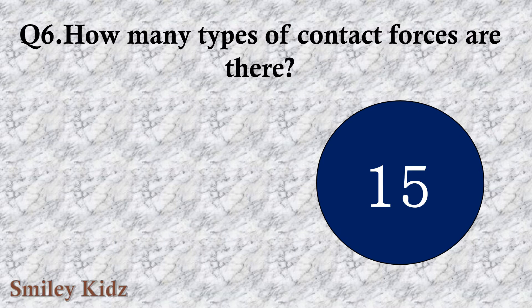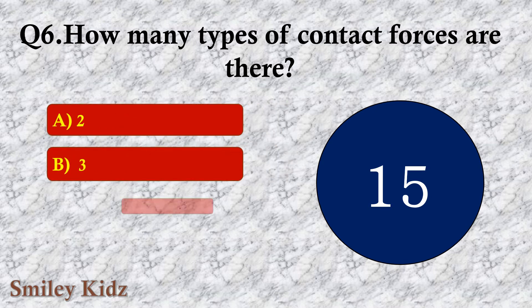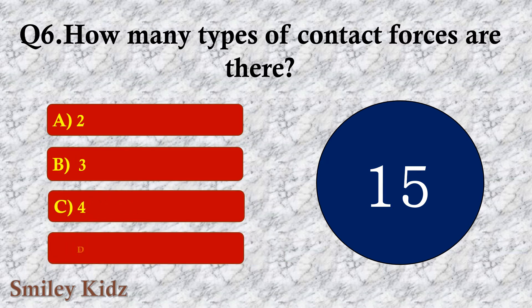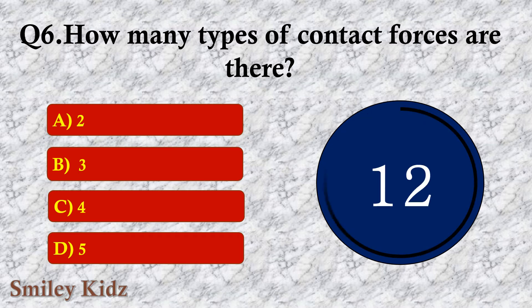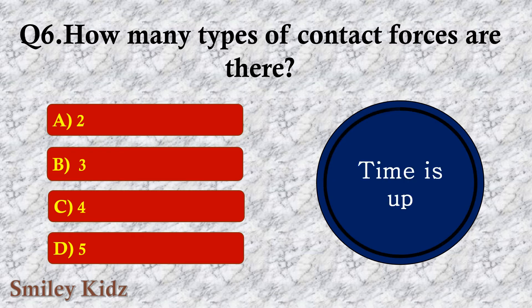Question number six: How many types of contact forces are there? The options are A. 2, B. 3, C. 4, or D. 5. The right answer is option A — 2. There are two types of contact forces.